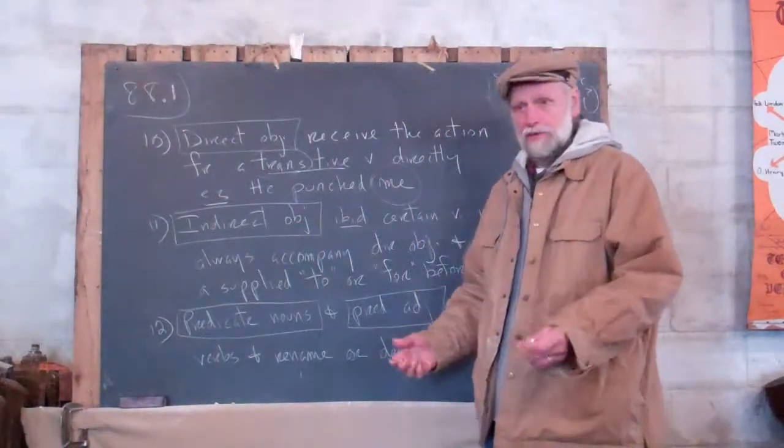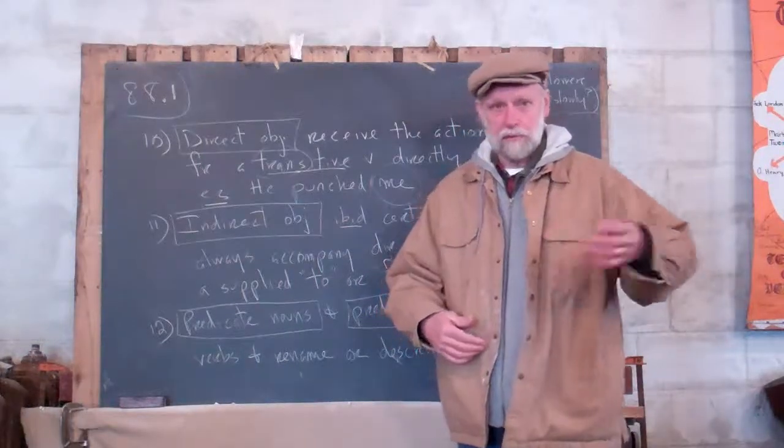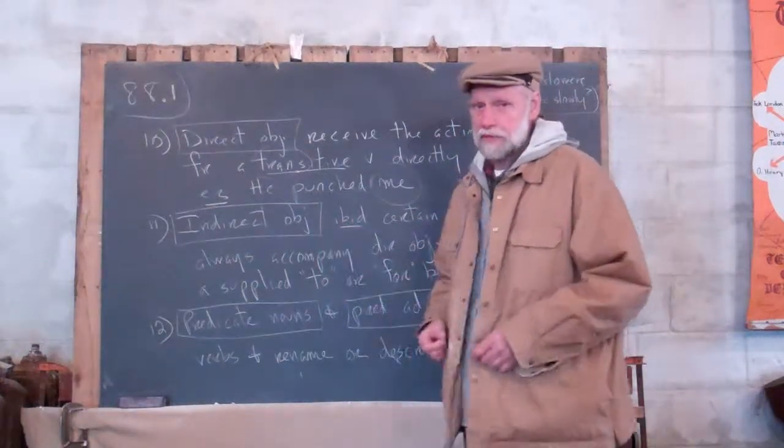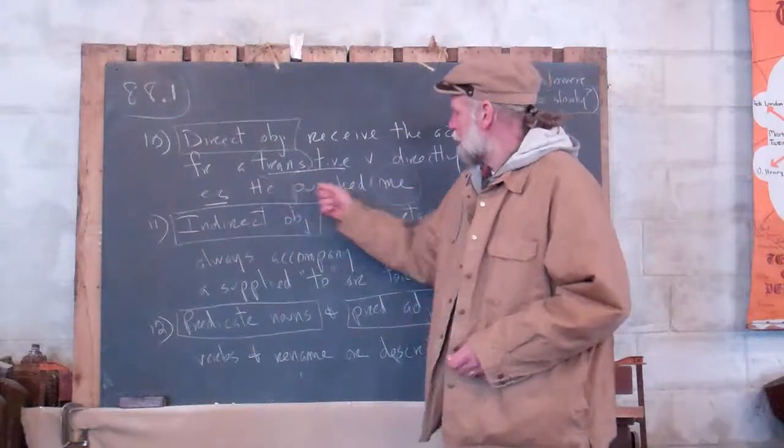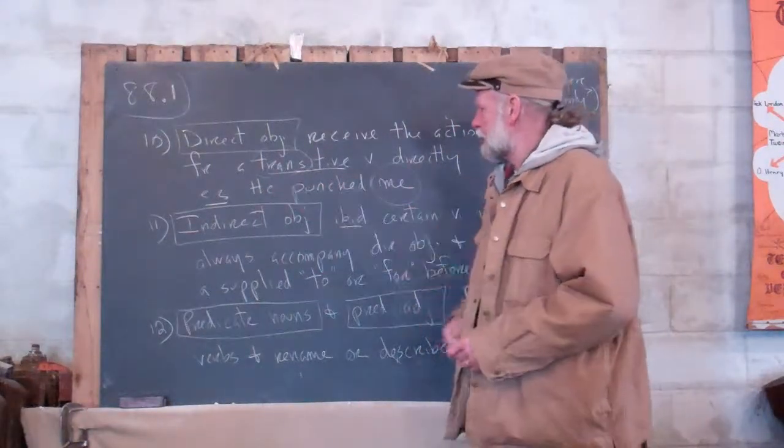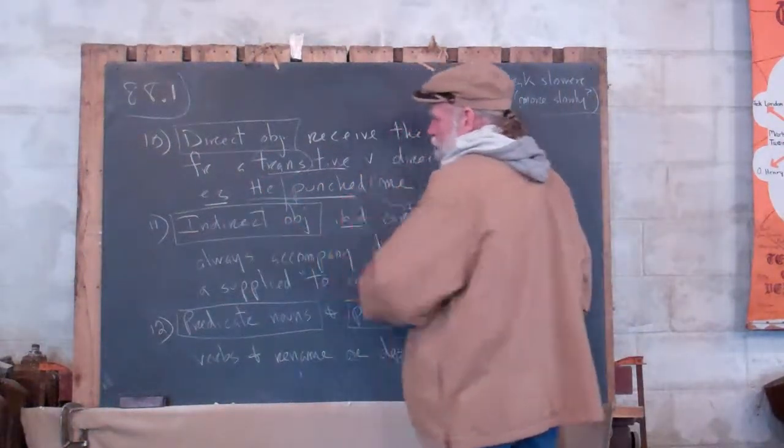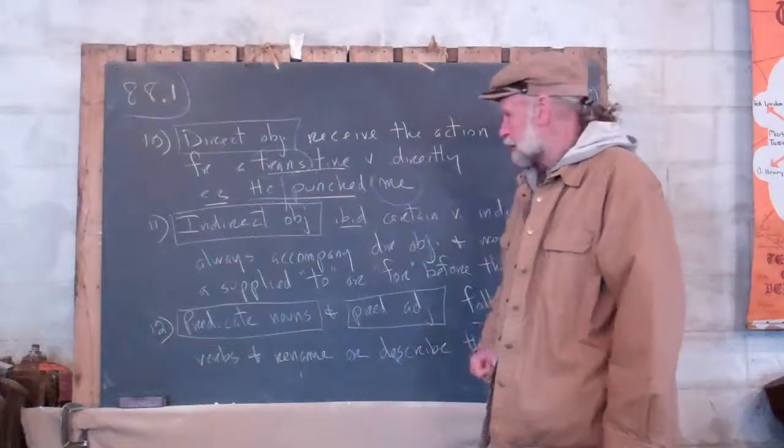Punched is a verb. It passes the test: Today I punched. Yesterday I punched. I have punched. He punched - there we've got our subject predicate pair. I can do this right on the board here. Subject, there's the predicate.